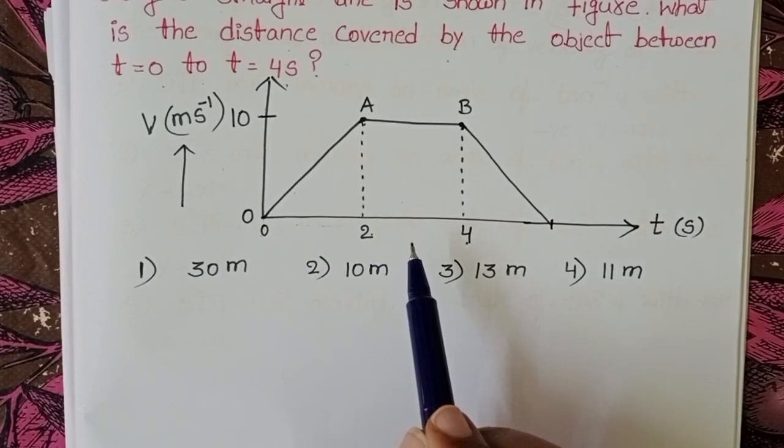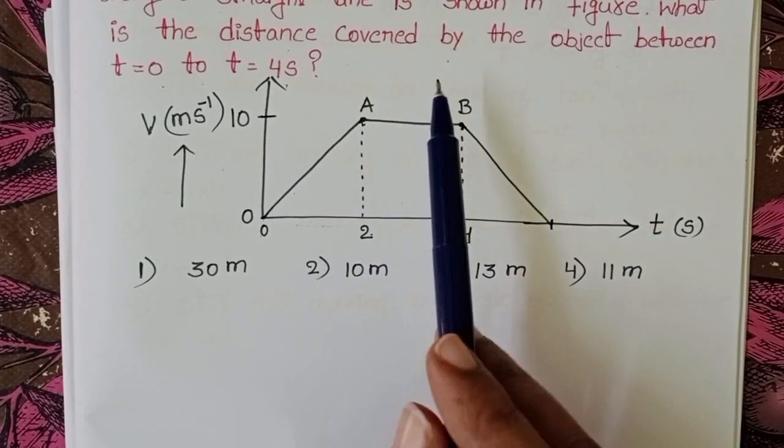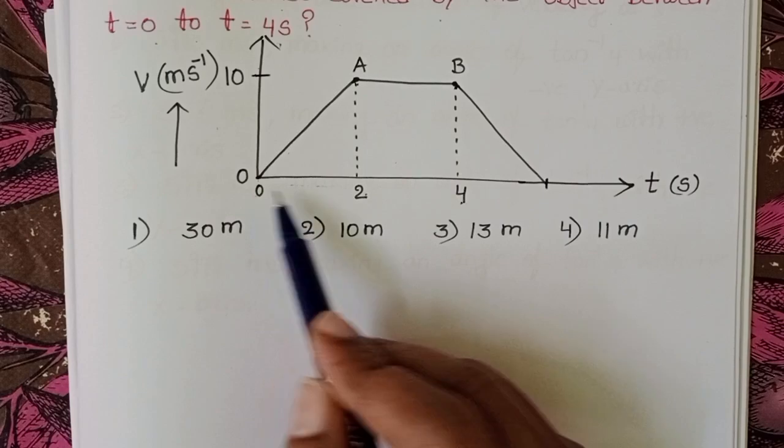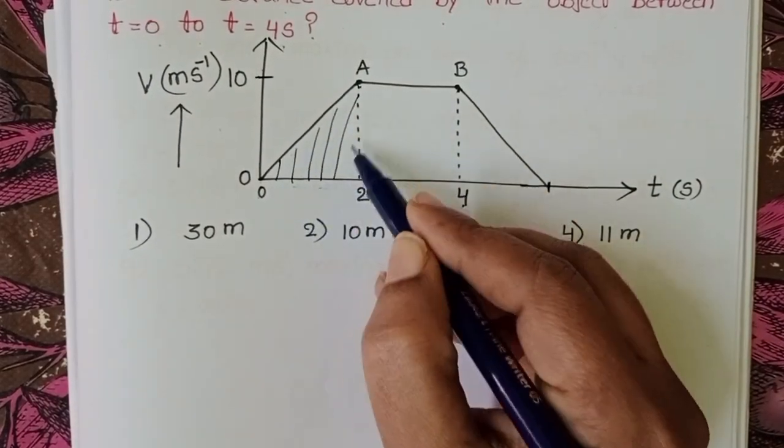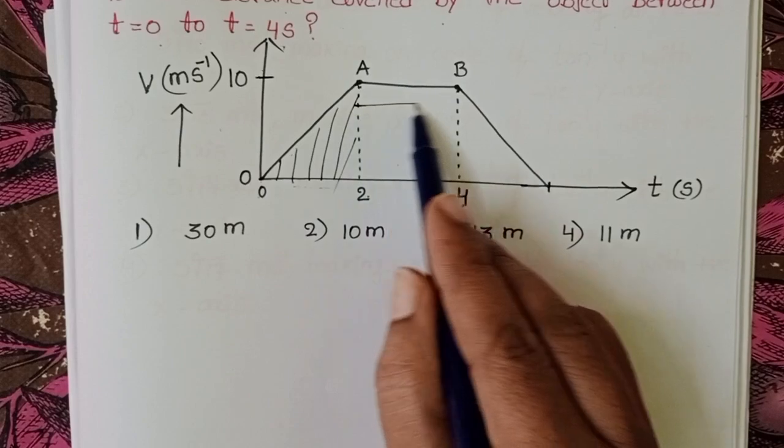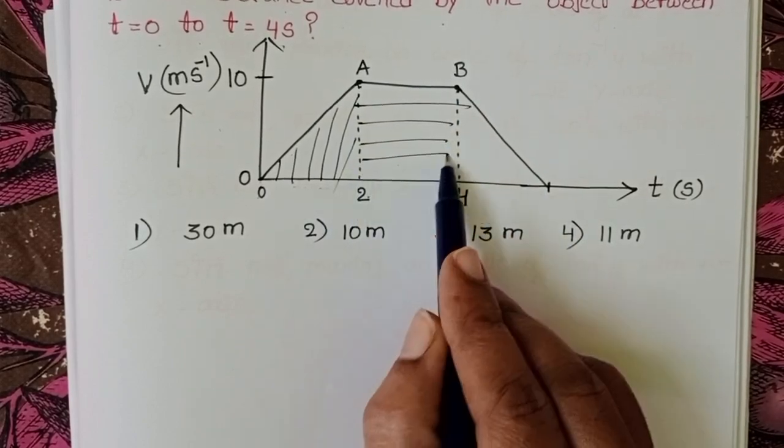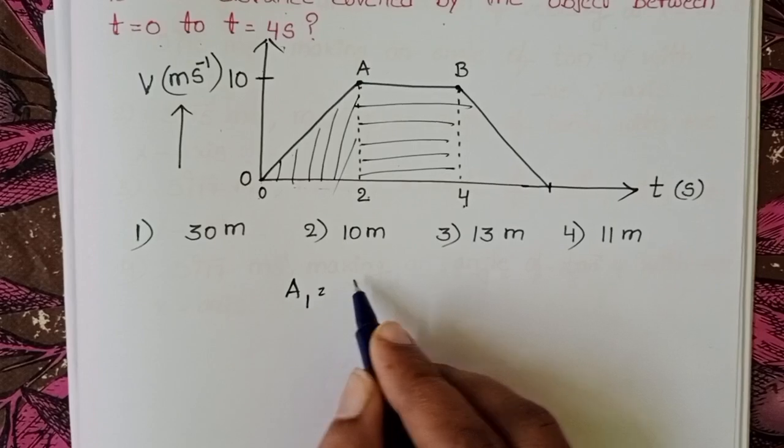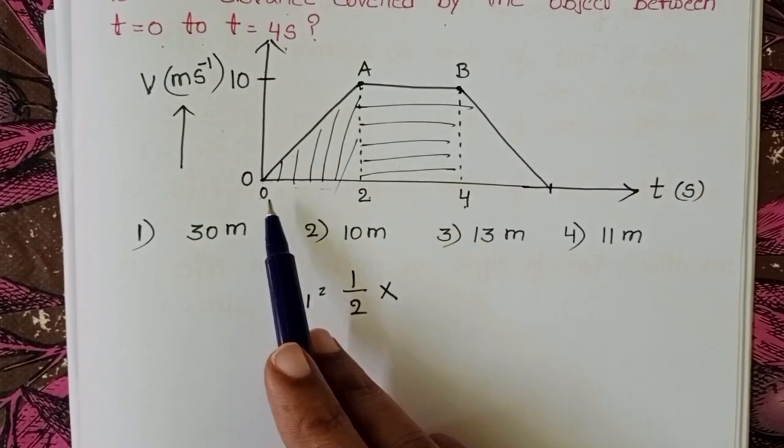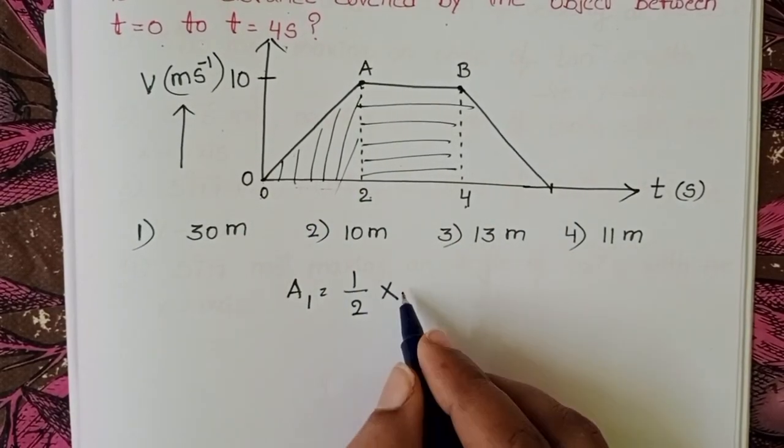Within the 4 seconds time, we have to find out the distance covered by the object. From 0 to 2 seconds, this area is like a triangle, and here this part is like a rectangle. A1 equals half into base equals time 0 to 2 seconds.